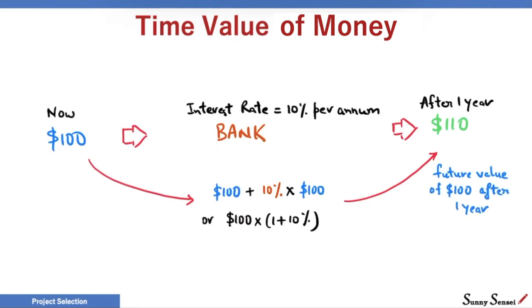If $110 is the future value of $100, it will not be incorrect to say that $100 is the present value of $110. Mathematically, dividing $110 by 1 plus 10%, or the interest rate, gives us the present value of $100.